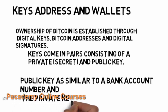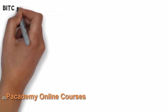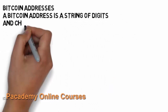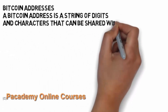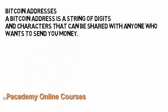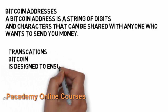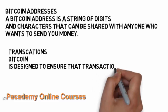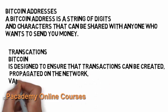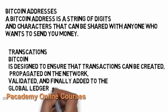The public key is very similar to your bank account number, and the private key is similar to your PIN. These two enable you to do transactions associated with Bitcoin. Another thing is the Bitcoin address — a Bitcoin address is generated when you create a Bitcoin wallet, and it is a string of digits and characters that can be shared with anyone. A person who has your Bitcoin address can send you money using that address.